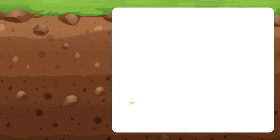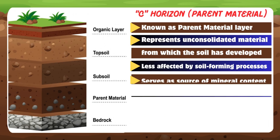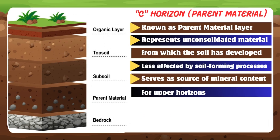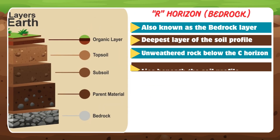C horizon — this layer is also known as the parent material layer. This is the layer that represents the unconsolidated material from which the soil has developed. It is less affected by soil-forming processes and serves as the source of mineral content for the upper horizons.